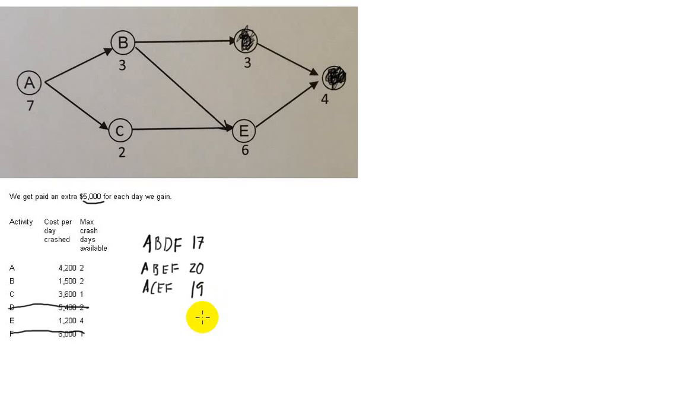Looking at what we've got right now, the longest path is the A to B to E to F, which takes 20 days. So if we're going to speed up the project, we have to speed up at least one of the critical activities. Now, we know that F can't be sped up. Out of A, B, E, and F, let's look at the possibilities.